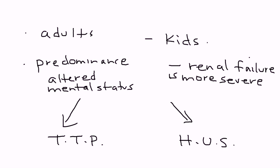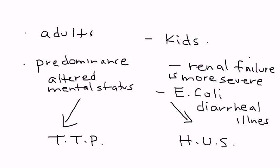One other thing that can help you differentiate is that HUS scenarios are often caused by some sort of E. coli infection — an E. coli diarrhea illness as a preceding factor. Those are some of the things you can use to differentiate between TTP and HUS, because the classic pentad is the same in both conditions.